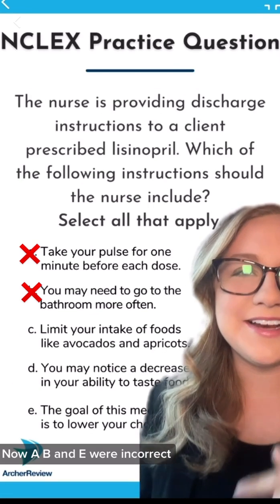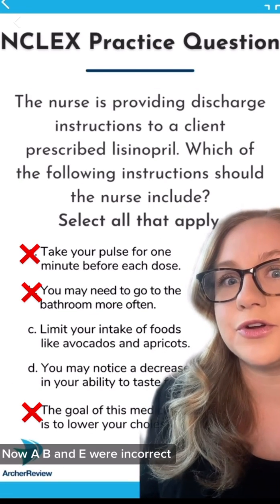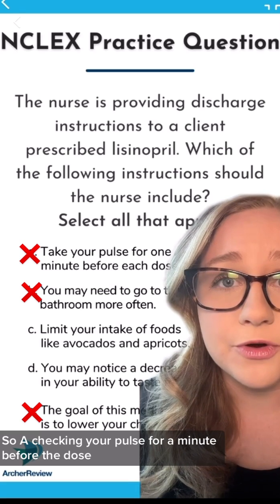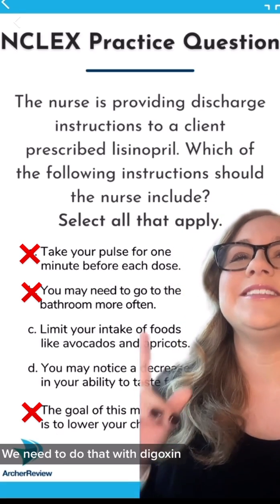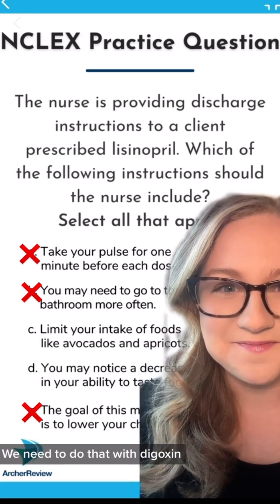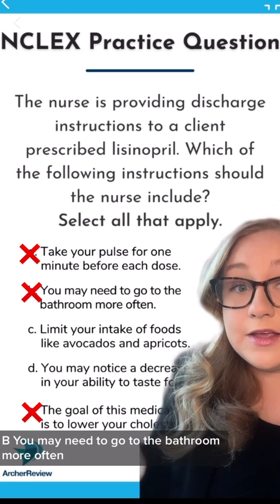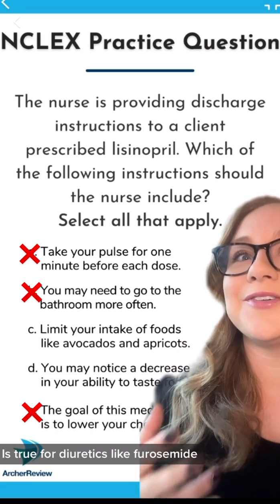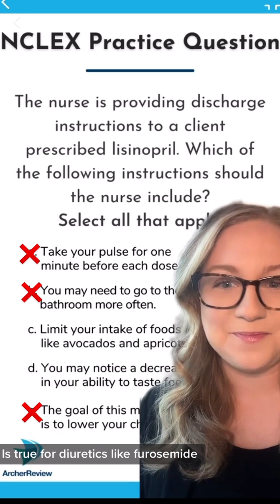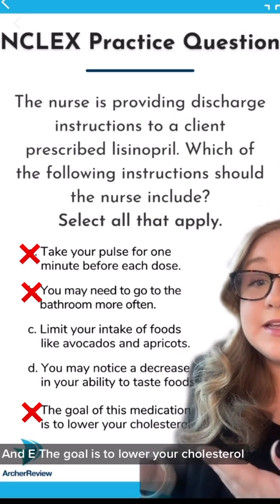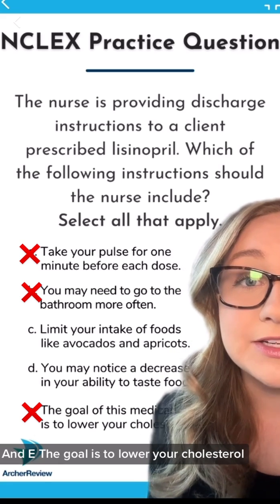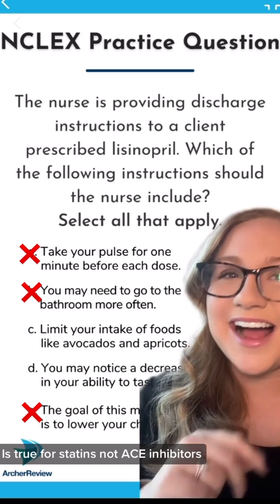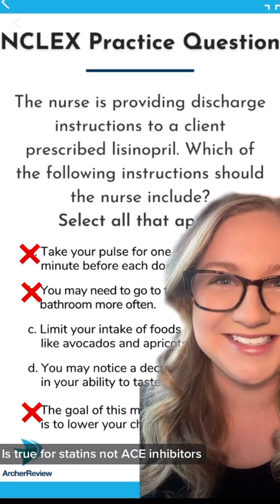Now A, B, and E were incorrect. A — checking your pulse for a minute before the dose — we need to do that with digoxin. B — you may need to go to the bathroom more often — is true for diuretics like furosemide. And E — the goal is to lower your cholesterol — is true for statins, not ACE inhibitors.